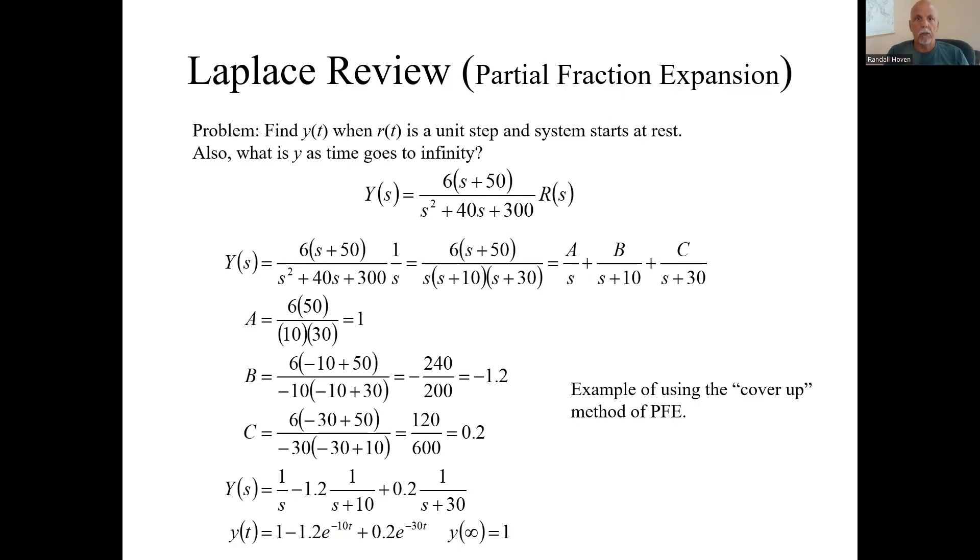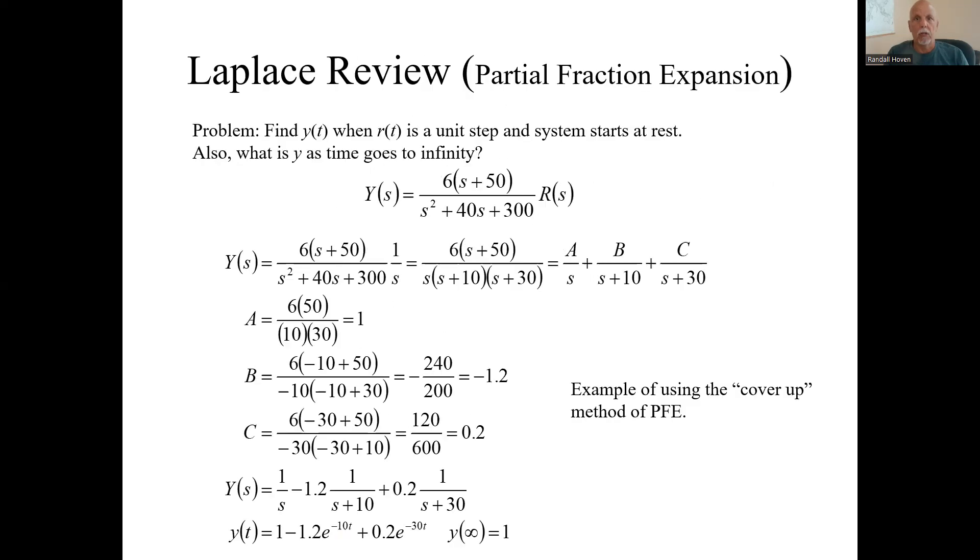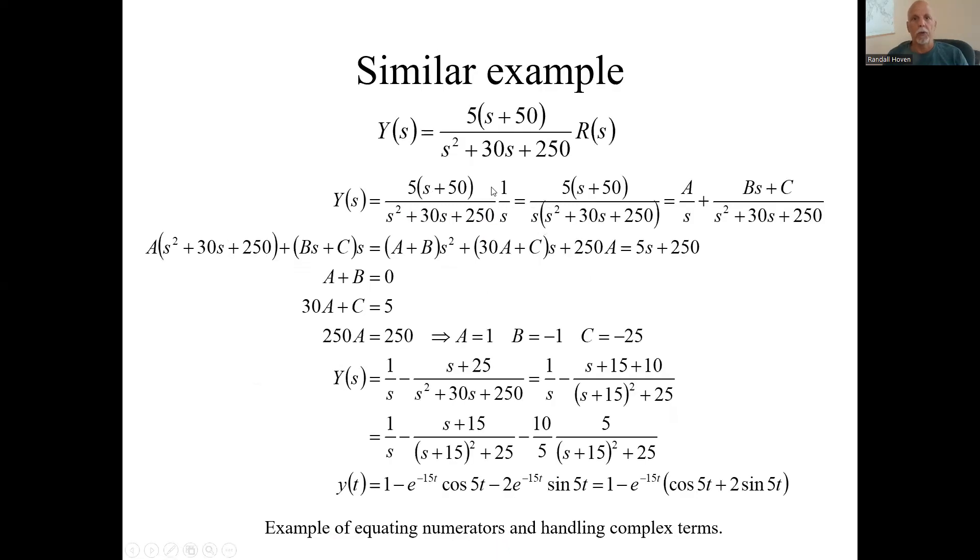This looks just slightly different. I think we just changed these two numbers, 40 and 300 to 30 and 250. Here you get a quadratic term in the denominator with complex conjugate roots. We leave the quadratic in the denominator.